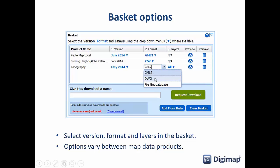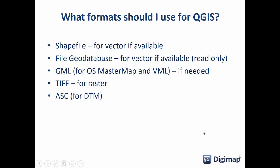Here we have options like GML and file geodatabase. We would always recommend file geodatabase or shapefile as your go-to format for QGIS — take shapefile if available, file geodatabase if available. File geodatabase is an Esri format but QGIS will read it without any problem, and it's usually available on the big feature-rich, attribute-rich datasets like MasterMap. Shapefile has an upper limit of two gigabytes, which you could approach if you're selecting a 100 kilometre square of a product. It also has limitations on the length of column names, which can cause problems with data accessibility.